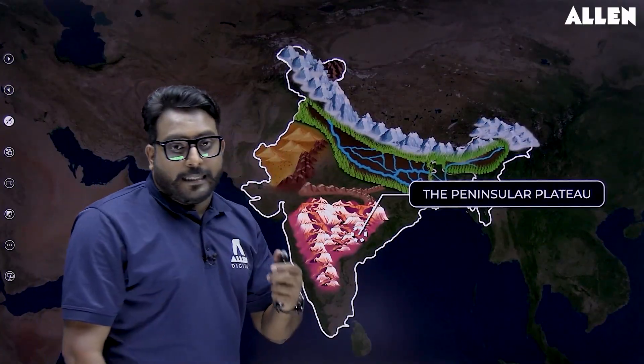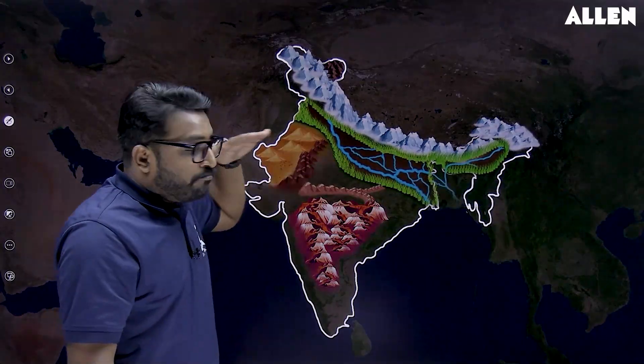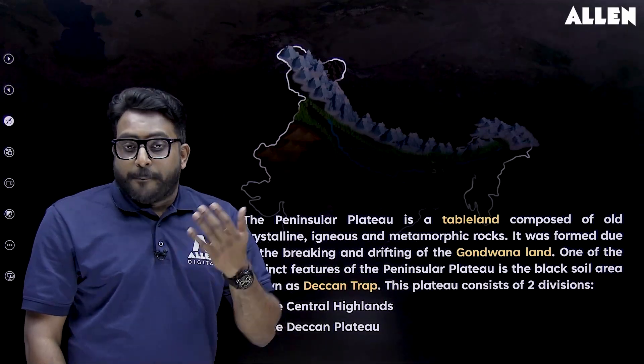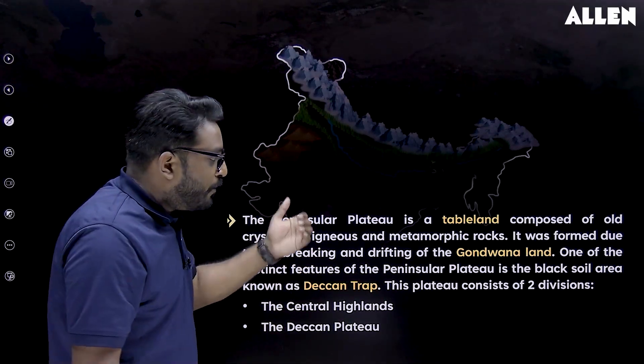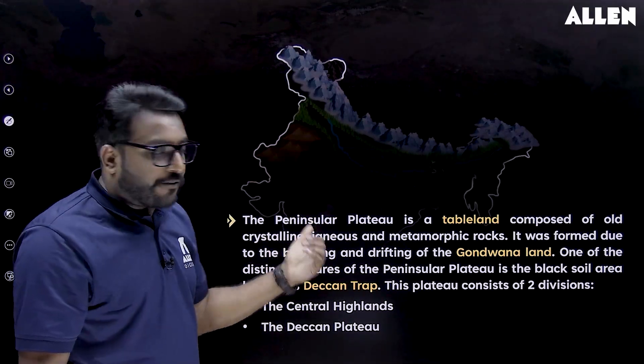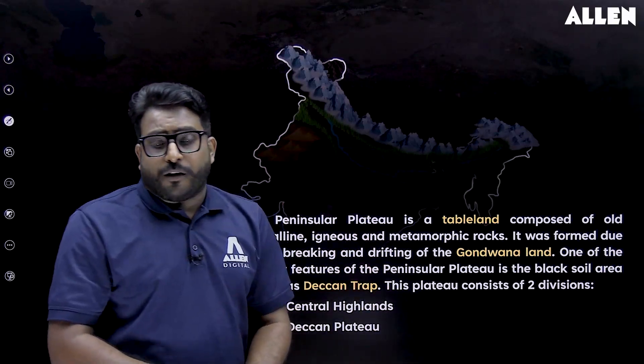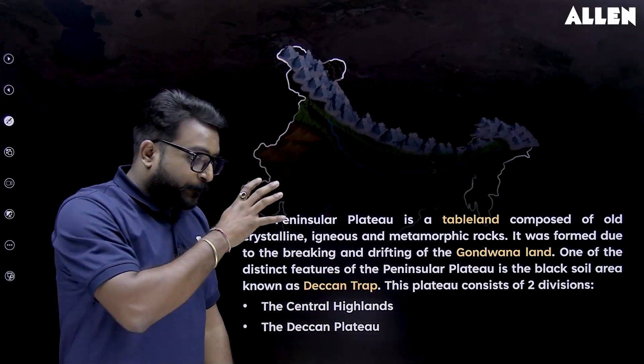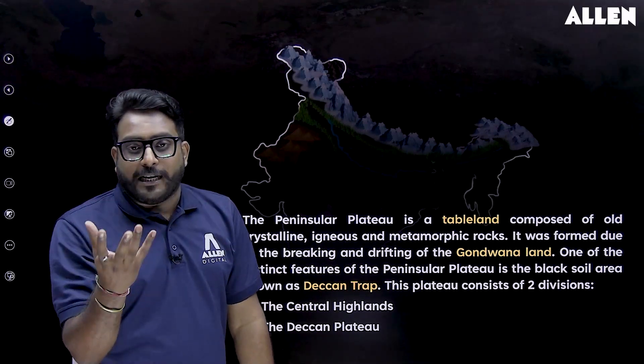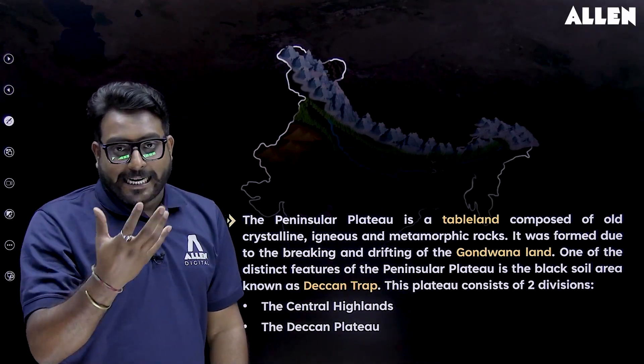The Peninsular Plateau is another important physical feature. A peninsula is a body of land surrounded by water on three sides. This plateau is a tableland composed of crystalline igneous and metamorphic rocks, formed due to the breaking and drifting of Gondwana Land. One distinctive feature is the black soil area known as the Deccan Trap.